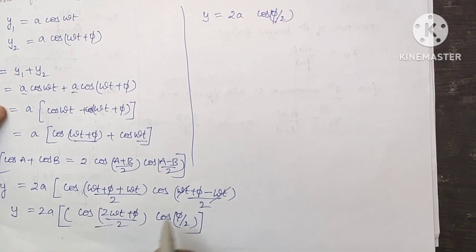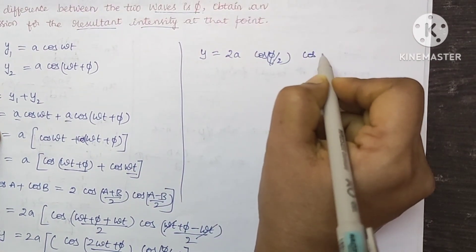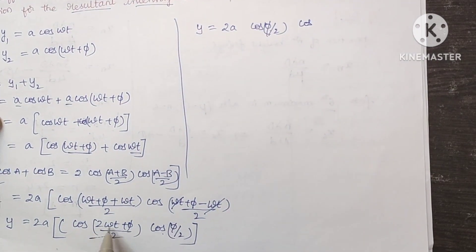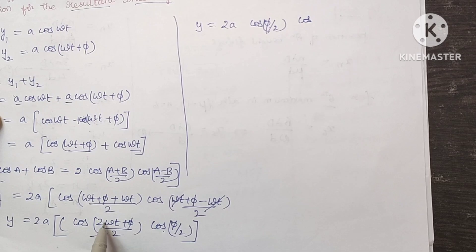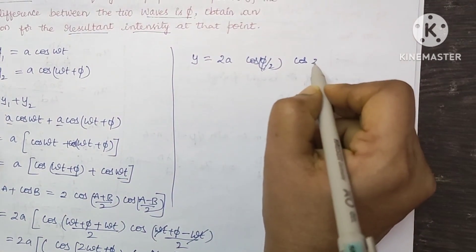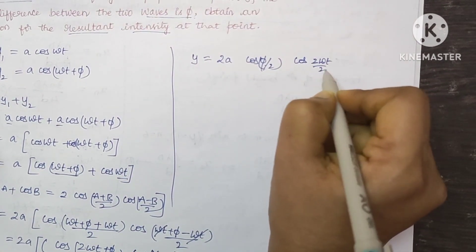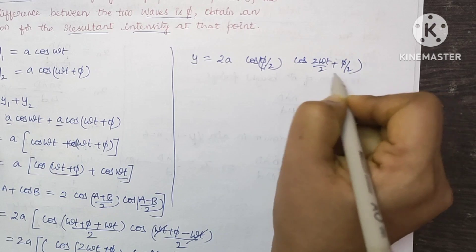And here it is cos omega t. Here 2 I am separating this denominator for this and this also. So 2 omega t by 2 plus phi by 2.